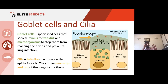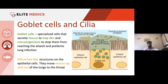Those are the three main structural and mechanistic components. Now let's look at some of the specialised cells involved. We have goblet cells — interspersed between ciliated cells. The goblet cell is slightly smaller than the ciliated cell, because the ciliated cells have hair-like projections. Goblet cells do not have these projections.